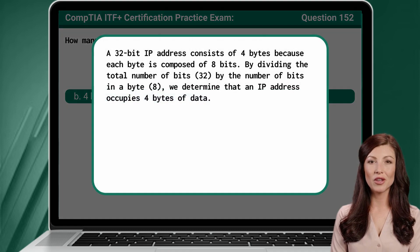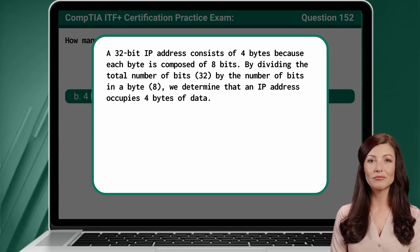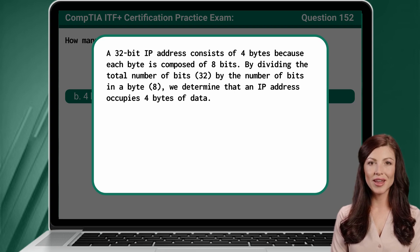A 32-bit IP address consists of 4 bytes because each byte is composed of 8 bits. By dividing the total number of bits, 32, by the number of bits in a byte, 8, we determine that an IP address contains 4 bytes of data.